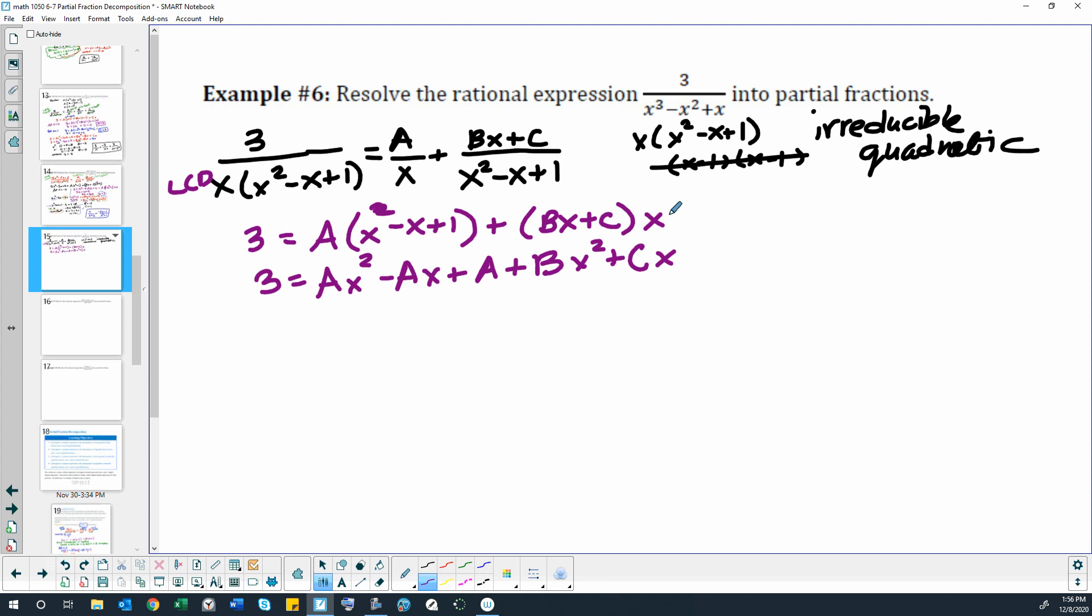Okay, so I distributed the a through all of this, I distributed the x through all of that, so now I'm going to gather my terms. So I'll take my x squared terms, which we have 0 on the left, and then we'll have ax squared and bx on the right.